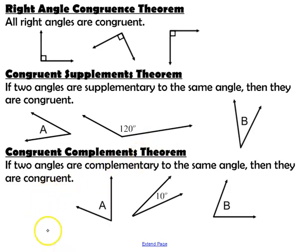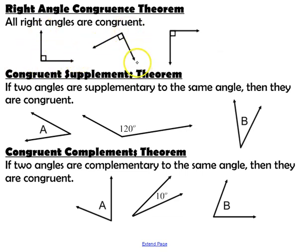Next, let's talk about some angle congruence theorems. The right angle congruence theorem states that all right angles are congruent. Since all right angles have an angle measure of 90 degrees, that makes all of their measures equal to each other, so all right angles are congruent.